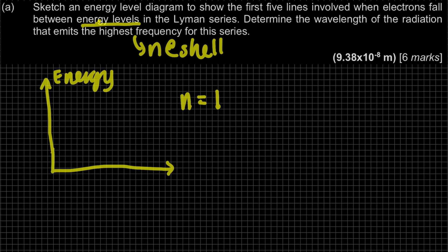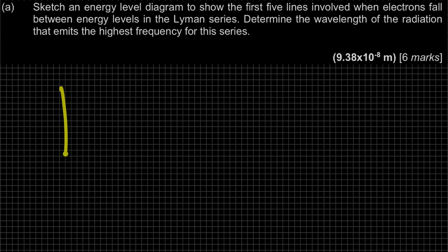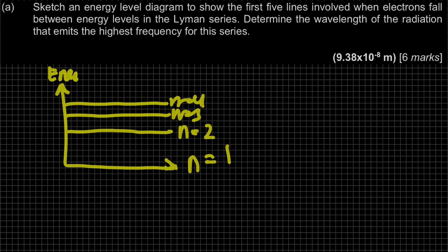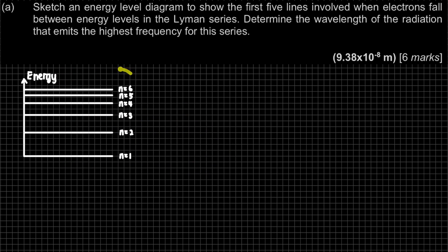We're going to start with N equal to 1 — there is no N equal to 0, it must start with N equal to 1. So when we draw it, we have N equal to 1, then N equal to 2, N equal to 3, N equal to 4, N equal to 5, and so on until infinity. For the axis, label the Y-axis as energy. For each line, make sure the gap is getting nearer to each other — from N=1 until N=6, the spacings converge.